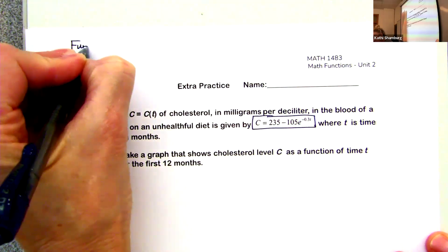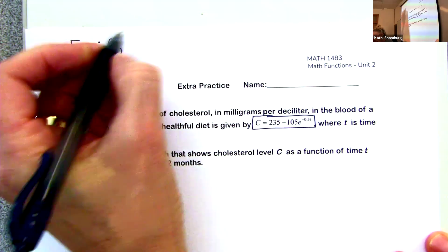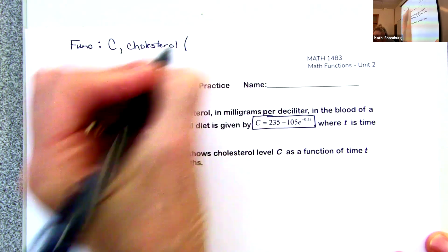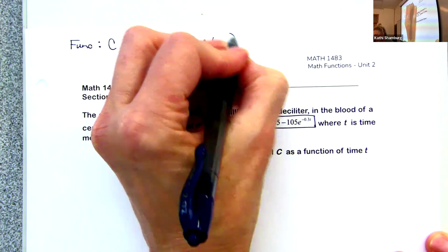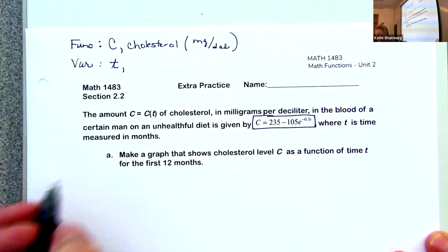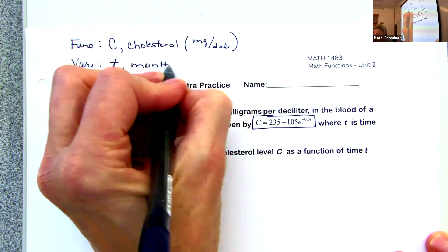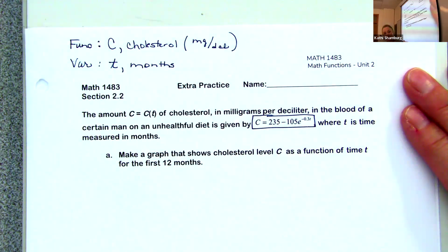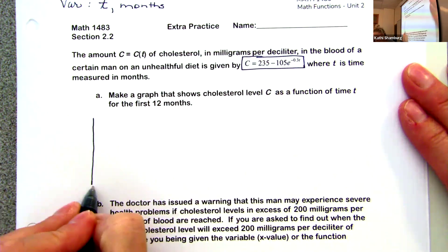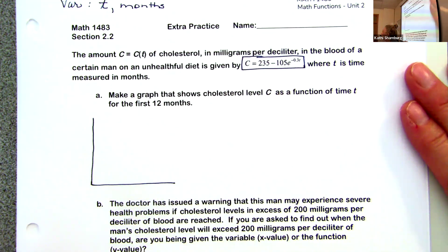So what letter is my function? C. What does it measure? That is measured in milligrams per deciliter. What is your variable? And what does that represent? Months, or number of months. So based on that information, I can draw my x and y axis — my vertical and horizontal lines — and then I can label my axes.